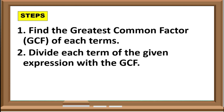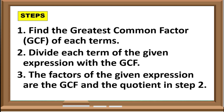If we will apply the concept of factoring here, the product would be the given, and we are going to solve for its factors. Here are the steps in factoring polynomials with common monomial factor. First, find the greatest common factor, GCF, of each term. Second, divide each term of the given expression with the GCF. And third, the factors of the given expression are the GCF and the quotient in step 2.